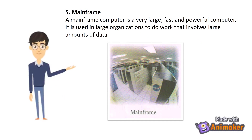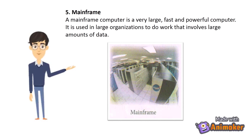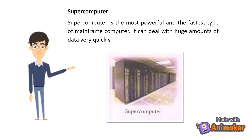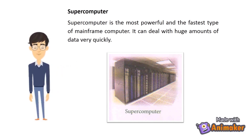Mainframe: a mainframe computer is a very large, fast, and powerful computer. It is used in large organizations to do work that involves large amounts of data. Supercomputer: a supercomputer is the most powerful and fastest type of computer. It can deal with huge amounts of data very quickly.